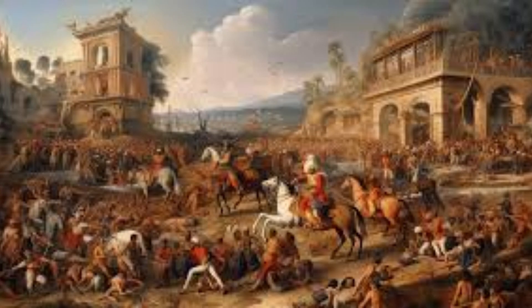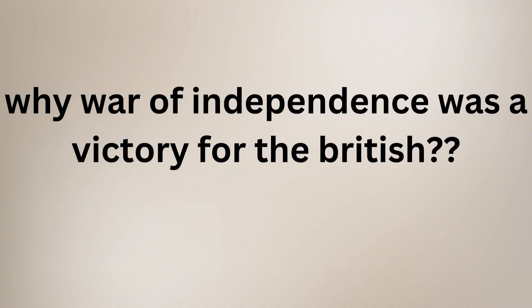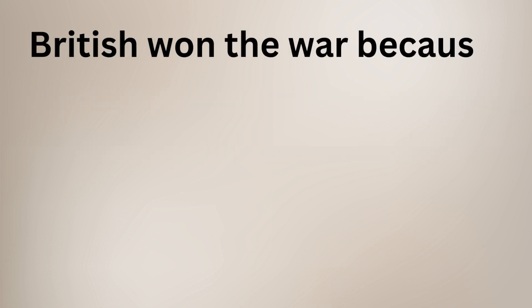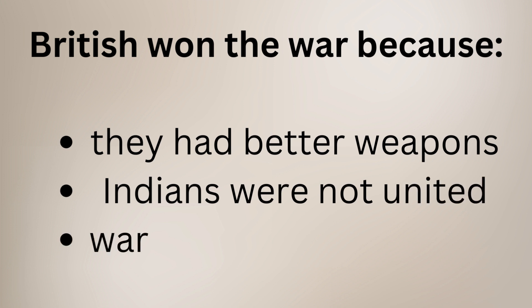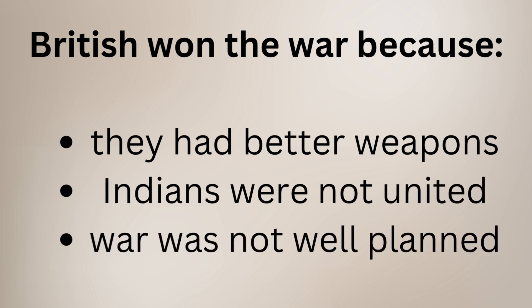The War of Independence ended as a victory for the British. The reasons for the British victory were basically their superior war tactics and better weapons. Moreover, the Indians were not united — many states of India helped the British instead of helping their own leaders. The Indian leaders were also not united and everyone was fighting for their own benefit. Along with this, the war was not well planned; it was abruptly started without proper planning, and there was no coordination or communication among different leaders. All these reasons led to the failure of the Indians in the war.